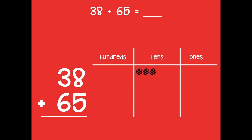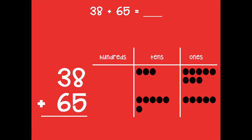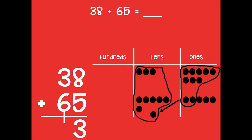Here's 38 plus 65 rewritten in vertical form: 38 is three tens and eight ones; 65 is six tens and five ones. Starting in the ones place, I compose a ten because there are more than ten ones. Those ten ones become a new ten, so in vertical form I have one new ten and three ones. Moving to the tens place, I compose those ten tens into a hundred, leaving zero tens and one new hundred. So 38 plus 65 equals 103.